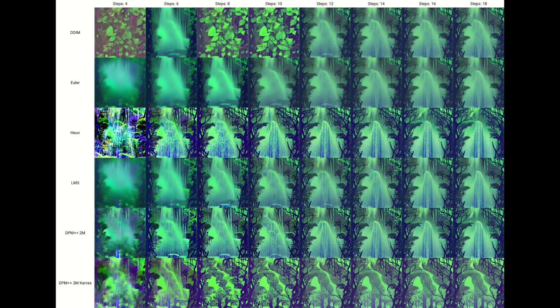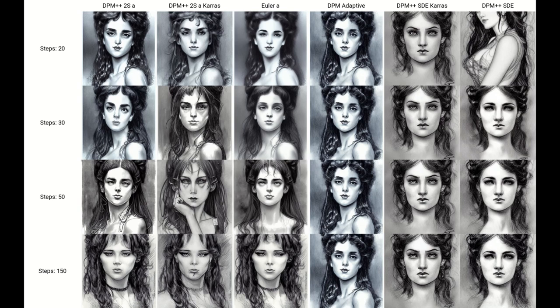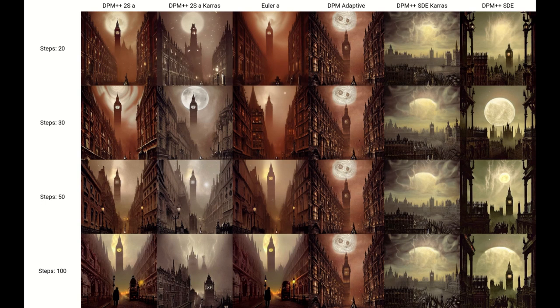We've just knocked out six or seven samplers, but we're not done yet. Just like in group 1, there are a couple of easy eliminations in the rest of the samplers. DPM2A and DPM2A Karras appear to be inferior versions of DPM++2S A and DPM++2S A Karras respectively. While all of these methods are slow processing, DPM2A Karras and DPM2A take over 20 steps to get to a decent image, while DPM++2S A and DPM++2S A Karras usually look good by 15, making them more efficient for exploration and screening.